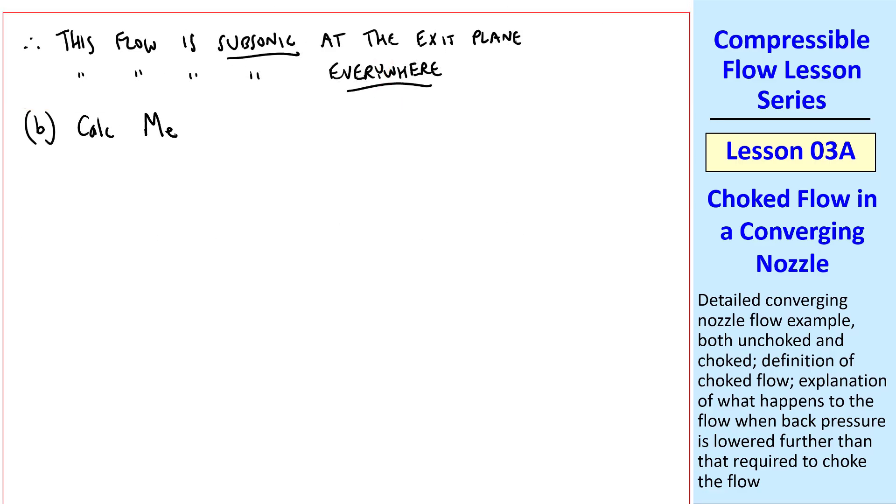Part B is to calculate the exit Mach number and the exit temperature. First thing we recognize is that since the flow is subsonic, Pe must equal Pb. I make a note here. Exit pressure Pe is not always equal to Pb, as we'll discuss later. But here, since the flow is subsonic, the exit pressure and the back pressure are the same.